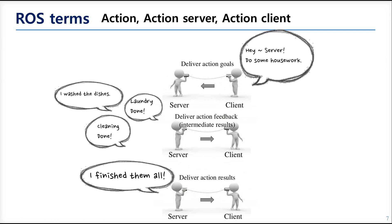The other type of communication uses the action message. You can think of this as a mixture of topic and service messages. Action is also duplex communication and also has a server and client, but when the client side sends a request, the server continues sending feedback until a specific task is finished. This can be used in tasks that need ongoing feedback, like parking a robot.